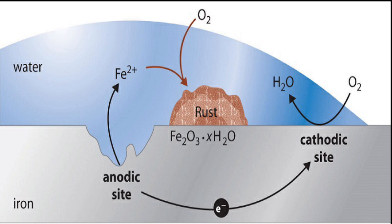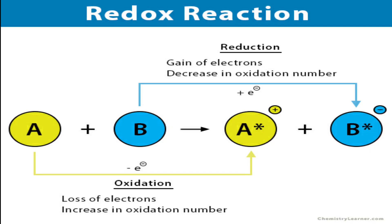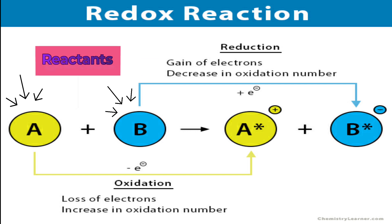Corrosion can be defined as the electrochemical process occurring naturally in which pure metals undergo transformation into undesirable substances when metal comes in contact with air and water. The metal in this process undergoes a redox reaction. A redox reaction is a reversible reaction in which electrons get exchanged between the two participating reactants.